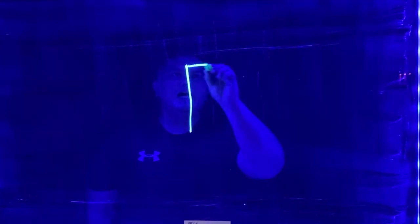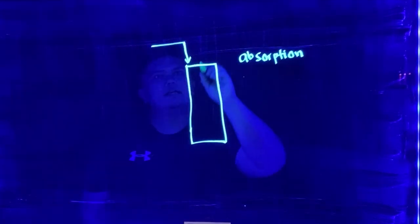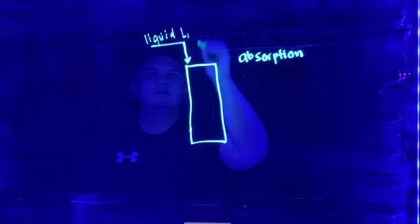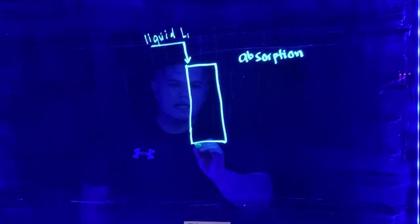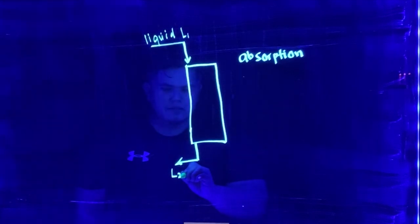Imagine that we have an absorption tower, so I spell it again so that you can remember it, absorption tower. The liquid is coming from the top, which is the solvent, and then it goes out. So this is L1, this is L2.